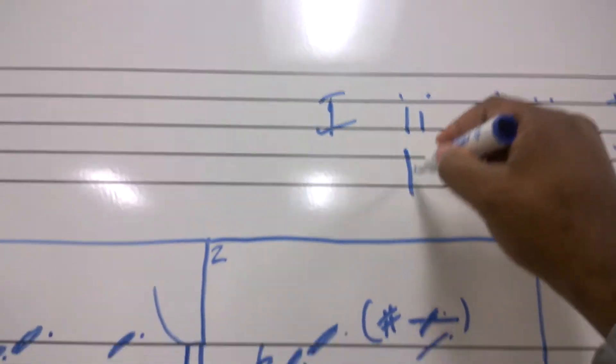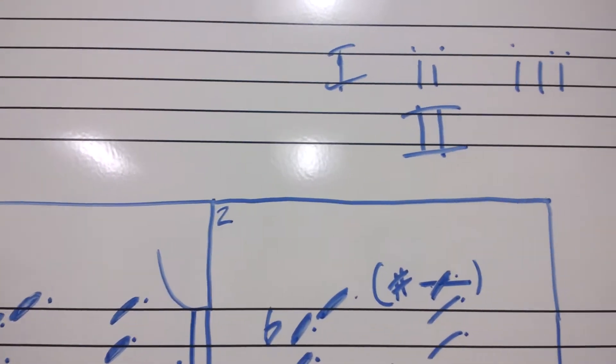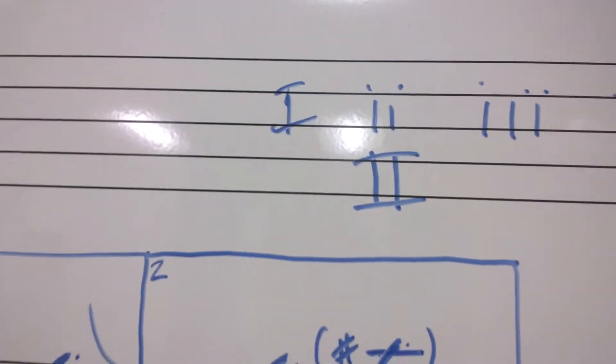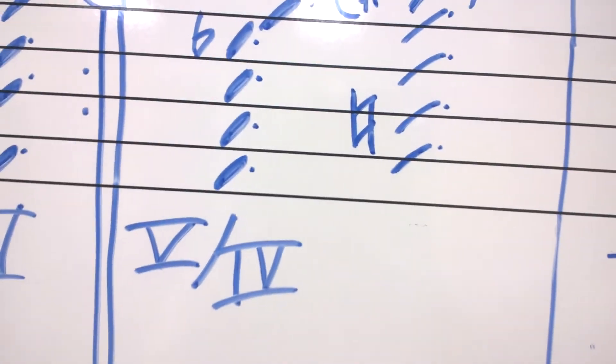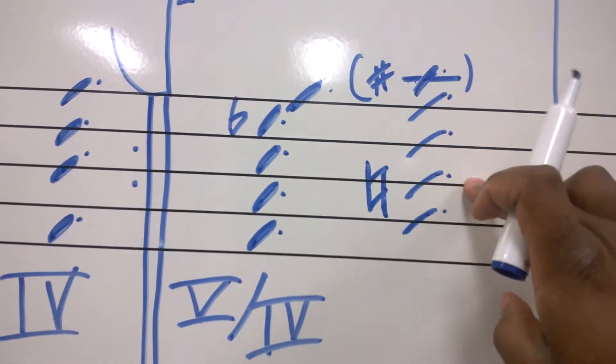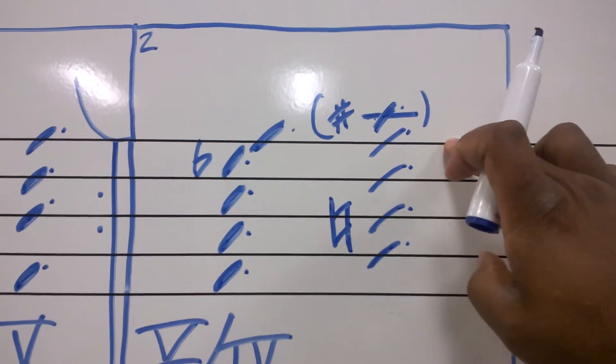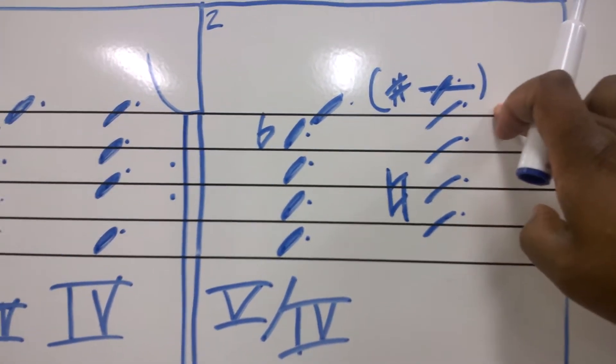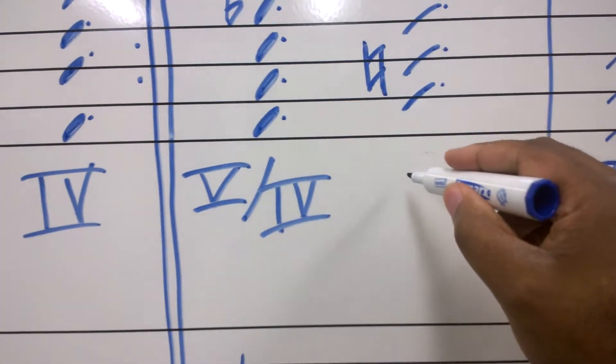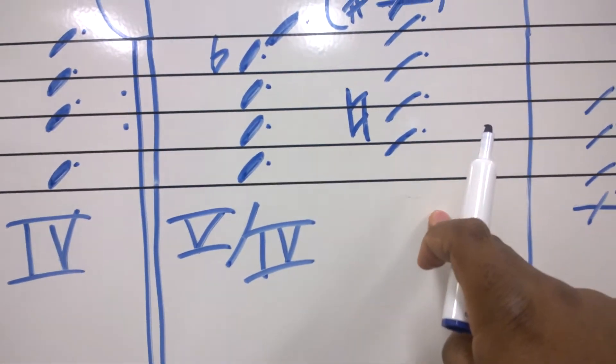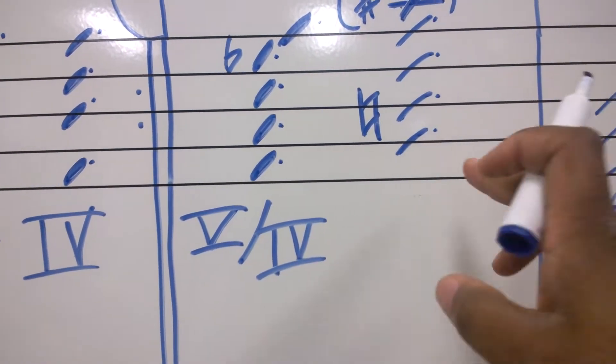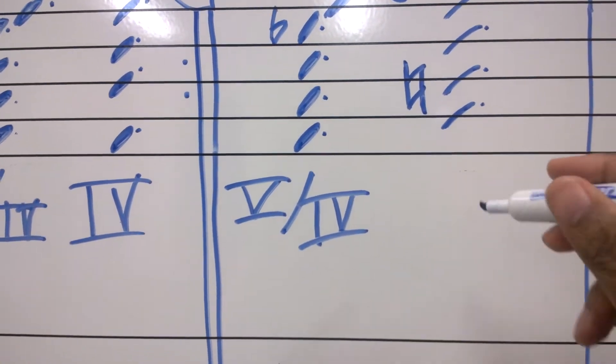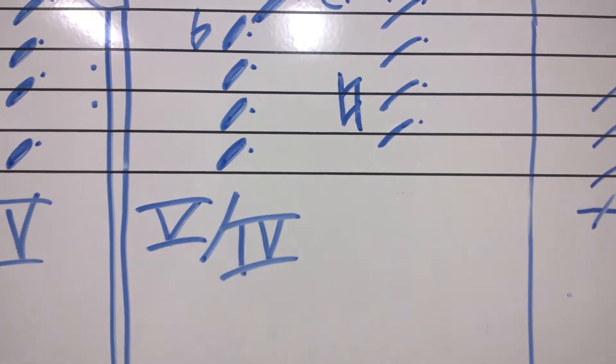So, that means this would be that symbol, which is not, that's not supposed to be there. So, what is that? You have G, B natural, D, and F. The F is actually the flat 7, which makes this another secondary dominant. G is a 5th away from what? B flat. It's another secondary dominant.